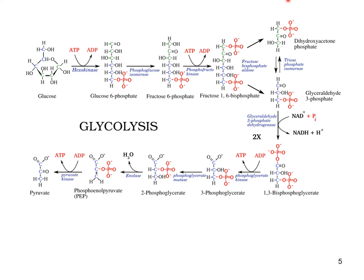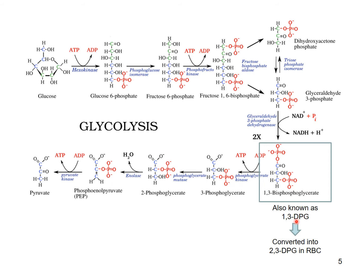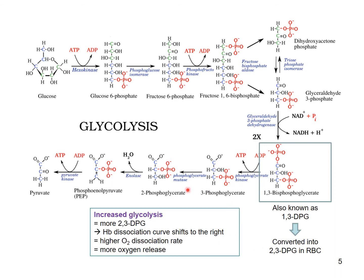Here are the 10 steps of glycolysis. At step 1,3-BPG (1,3-bisphosphoglycerate), also known as 1,3-DPG by physiologists — though biochemists prefer BPG for accuracy, since the phosphate groups are separated rather than side by side as in diphosphate — this 1,3-BPG is converted into 2,3-DPG by an enzyme within red blood cells. With increased glycolysis or increased metabolism, you have more 2,3-DPG production, which shifts the oxygen binding curve towards the right hand side and triggers more oxygen release from red blood cells.